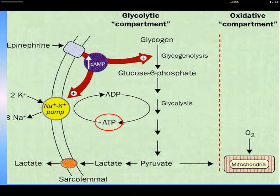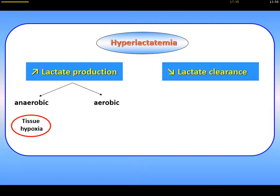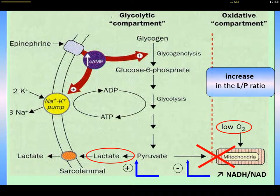Lactate comes from pyruvate in the cell. In some situations, you can have hyperlactatemia, either due to increased lactate production or to decreased lactate clearance. In general, it comes from increased lactate production, which could be from the aerobic pathway or the anaerobic pathway. The anaerobic pathway is the most important one, because of the presence of tissue hypoxia. In case of hypoxia, there is no possibility for pyruvate to enter the mitochondria.